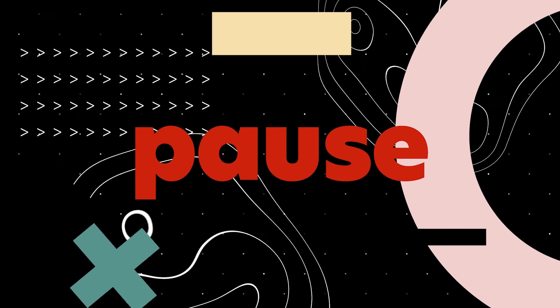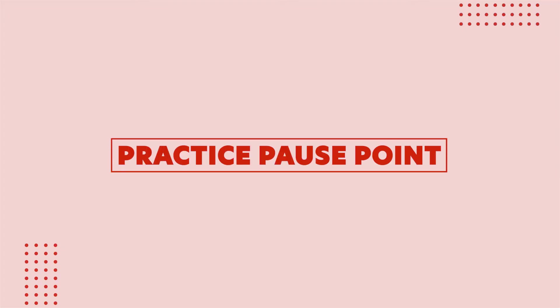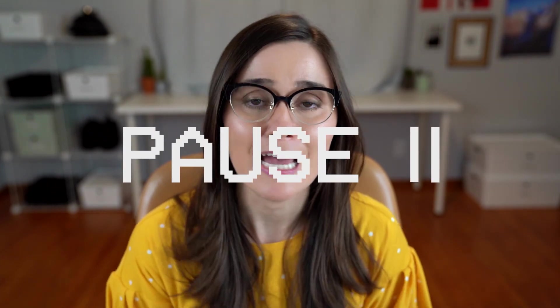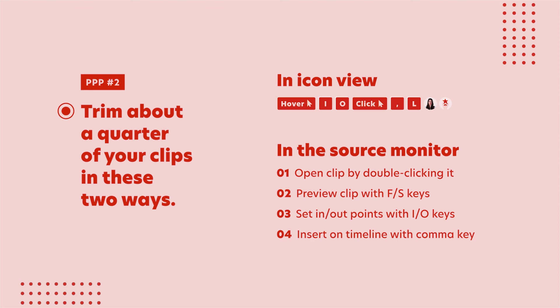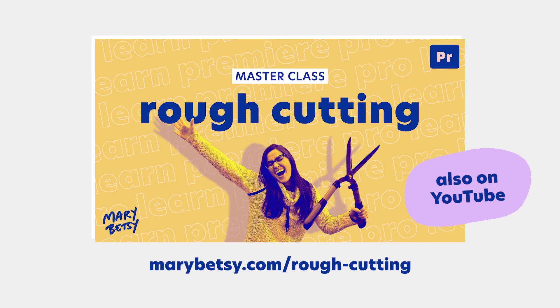How are you doing? Maybe take a stretch break, some coffee, a snack. We've reached a practice pause point — if you haven't been following along, now is the time to hit pause and practice. Take about a quarter of the video clips in your project and practice trimming them primarily in icon view using the keystroke choreography: hover, I, O, click, comma, L. You can also practice trimming in the Source Monitor in that big view. I'm Mary, I'm a filmmaker and I teach a course on making videos for your brand. This is a preview of one of the editing lessons — you can watch the full lesson online for free at the link on screen or in the description below.